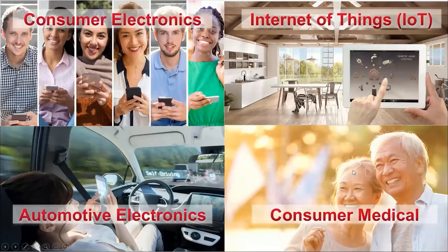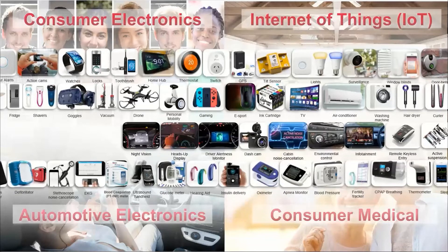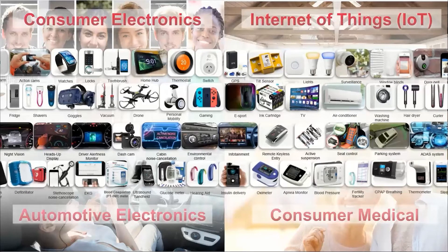In the IoT segment, we have devices like smart home, entertainment, security and surveillance, wearable appliances, and many more. In consumer electronics, we have home appliances, lighting solutions, personal care, and gaming. In consumer medical devices, we have hearing aids, blood pressure monitors, glucose meters, thermometers, handheld ultrasound, and sleep monitoring — increasing especially with the current pandemic. And lastly, in the automotive segment, electronics are growing in the form of remote keyless entry, seat control, parking systems, infotainment, dash cams, night vision, lighting control, and more.